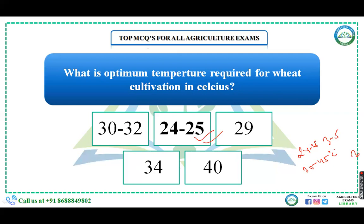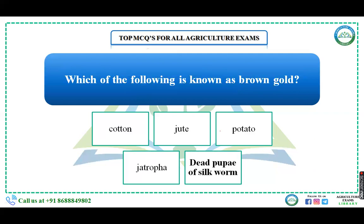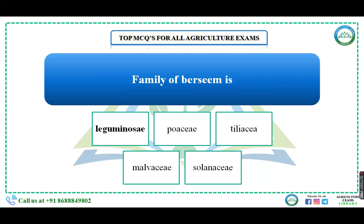Which of the following is known as brown gold — cotton, jute, potato, or jatropha? Cotton is known as white gold. Jute is known as the golden fiber. Potato is known as the poor man's friend. Jatropha is a bioenergy plant. Brown gold refers to the dead pupae of silkworm. So the answer is silkworm pupae.